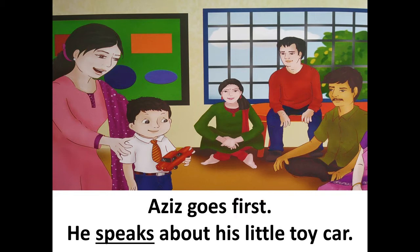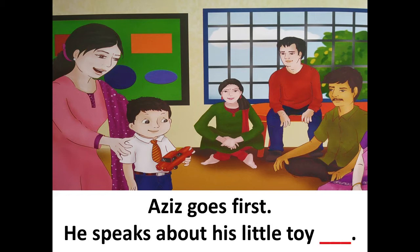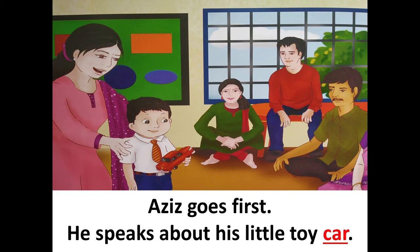He speaks about his little toy dash. What is Aziz going to speak about? Aziz has something in his hand and he is going to speak about that thing. What is in his hand? He speaks about his little toy car. Correct! The answer car has popped up in red.